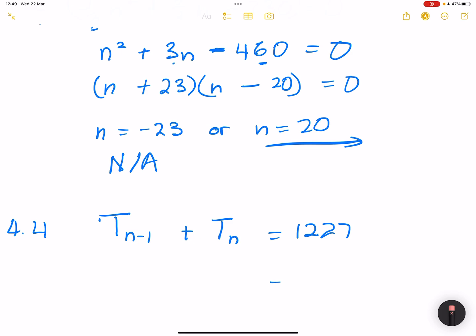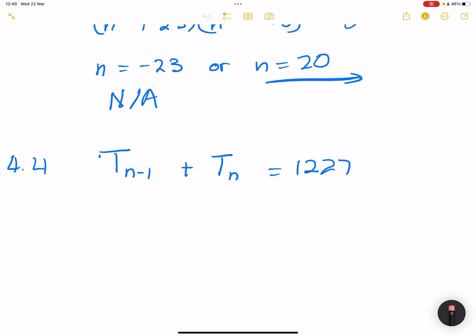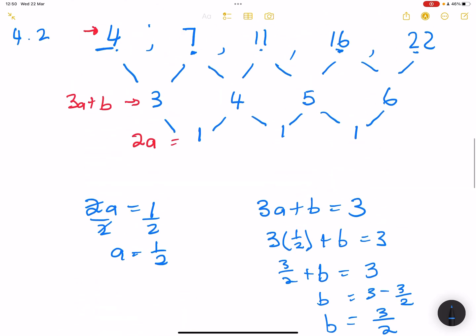So what does that mean? It means I am going to take the pattern. Remember, our pattern is half N squared plus three-halves N plus 2. So instead of N, I'm going to put N minus 1. So that's half N minus 1 squared plus 3 over 2 N minus 1. So everywhere where there's supposed to be N, I'm going to put N minus 1. Right. Plus 2. But I'm adding to that TN, which is half N squared plus 3 over 2 N plus 2. And this is equal to 1227. I believe they said 1227.